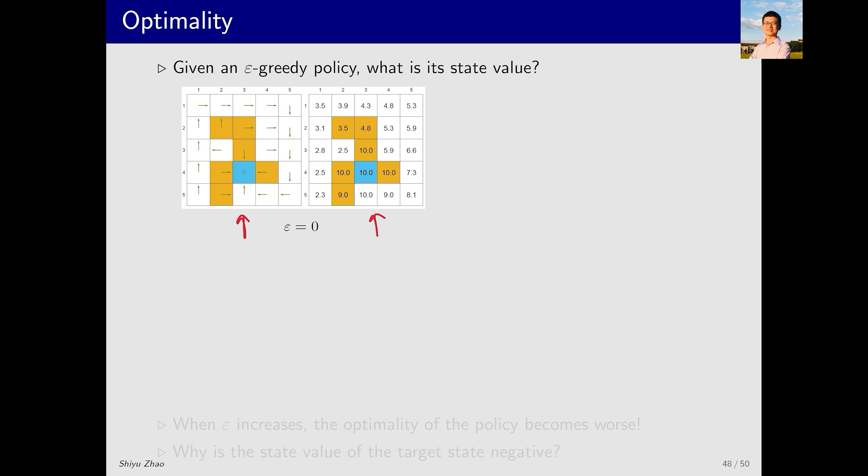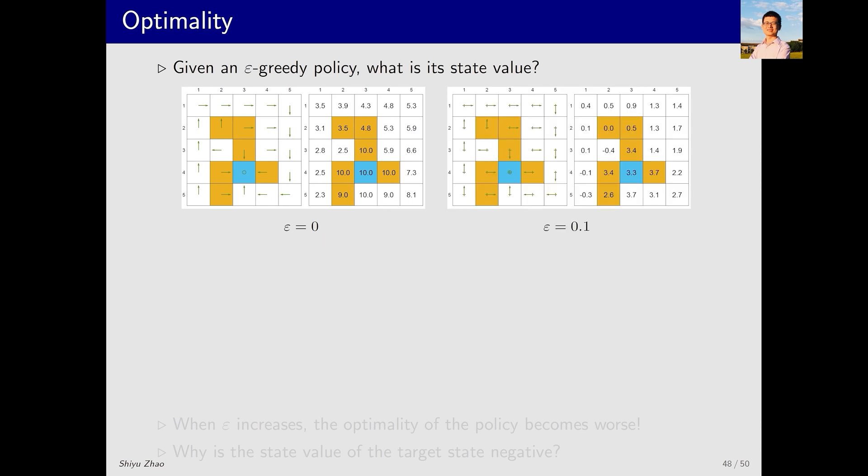The epsilon corresponding to the first policy is equal to zero, making it a greedy and optimal policy. The state values corresponding to this policy are shown here. When examining the second policy provided, it's important to understand its relationship with the first. They are consistent. For example, the direction to move here is upwards in the first policy, and in the second policy, the highest probability here also leads upwards. However, the second policy assigns a smaller probability to other actions as well. This is called consistent.